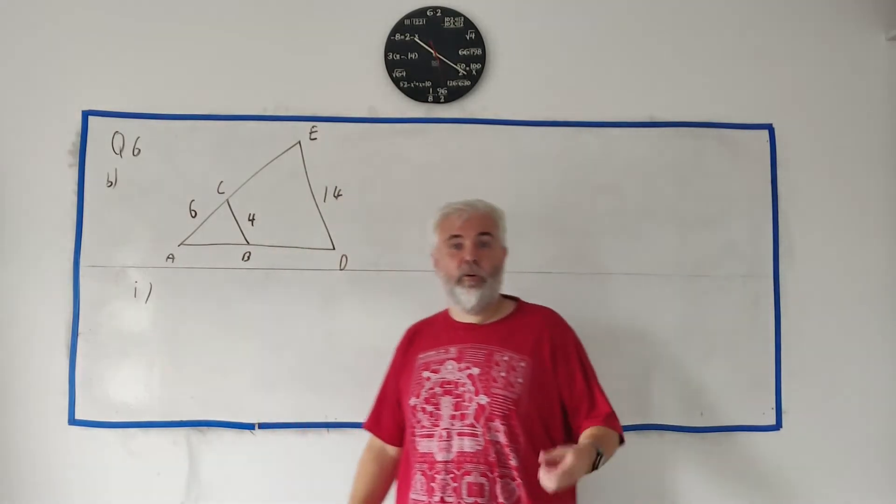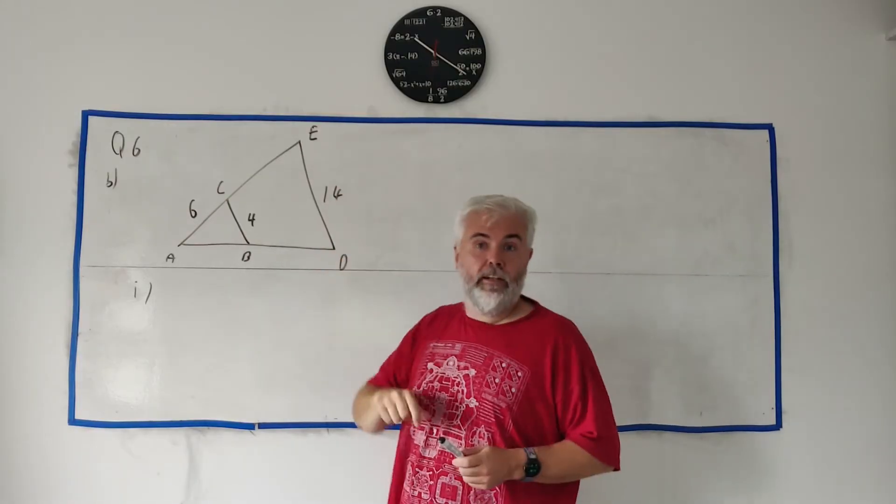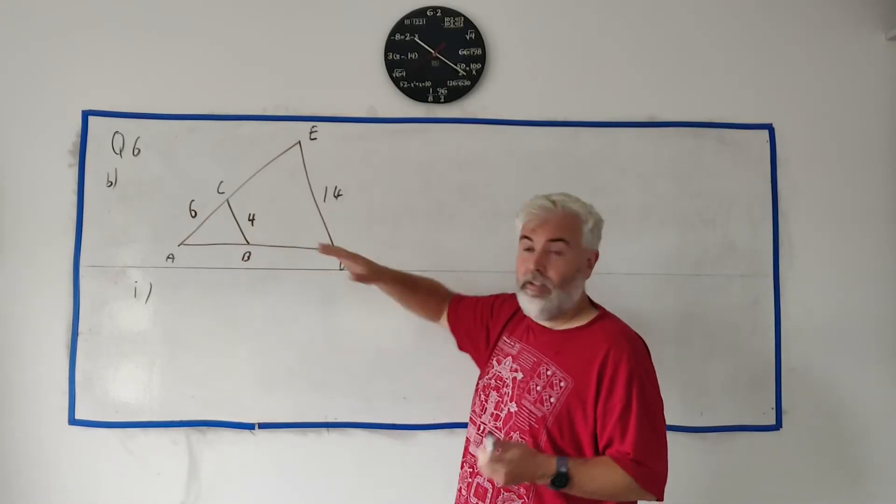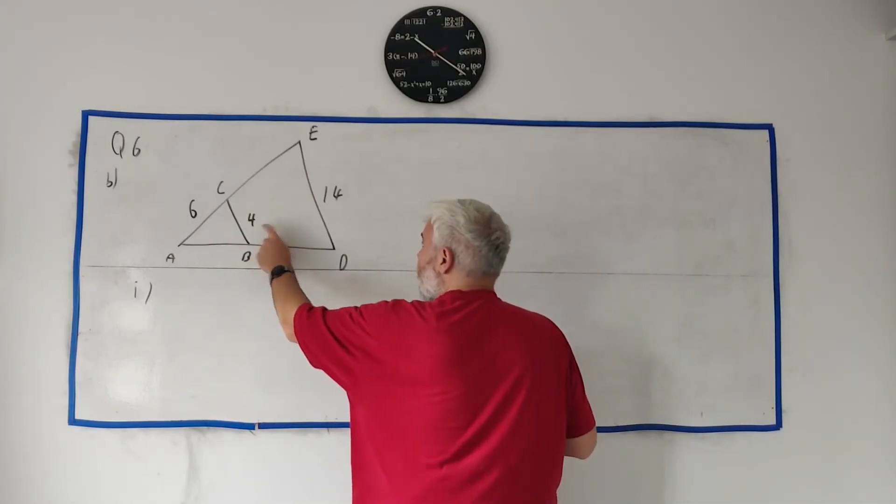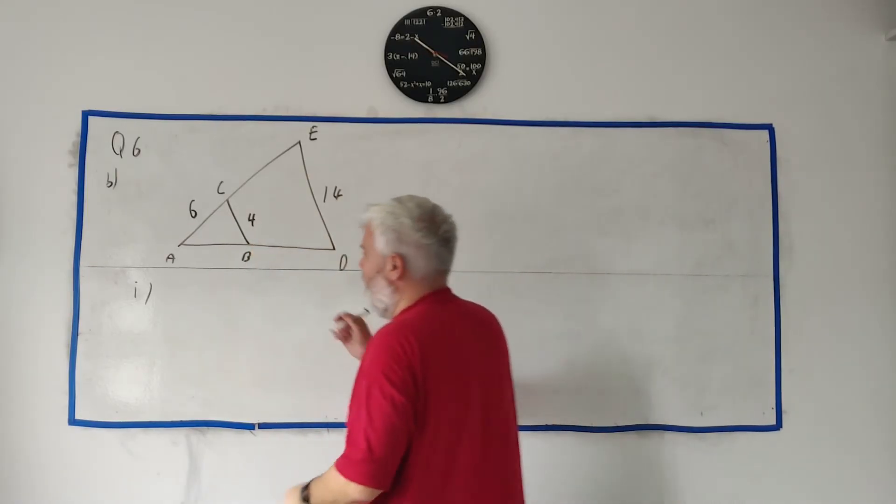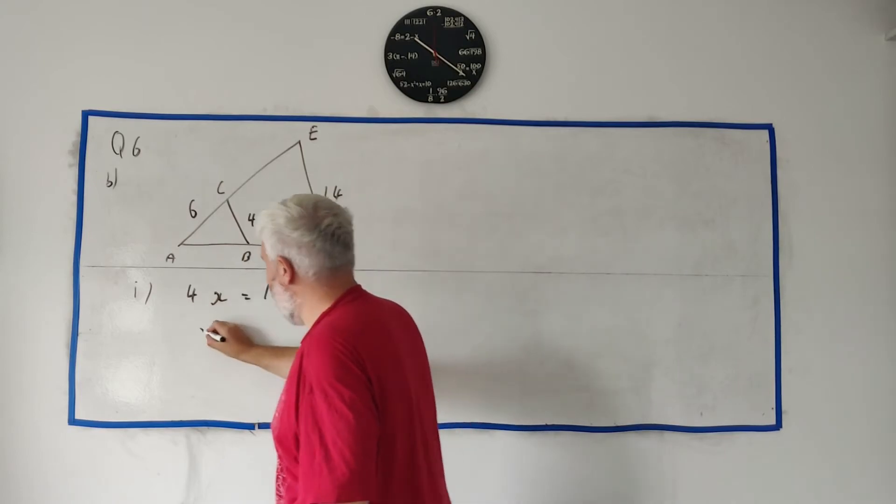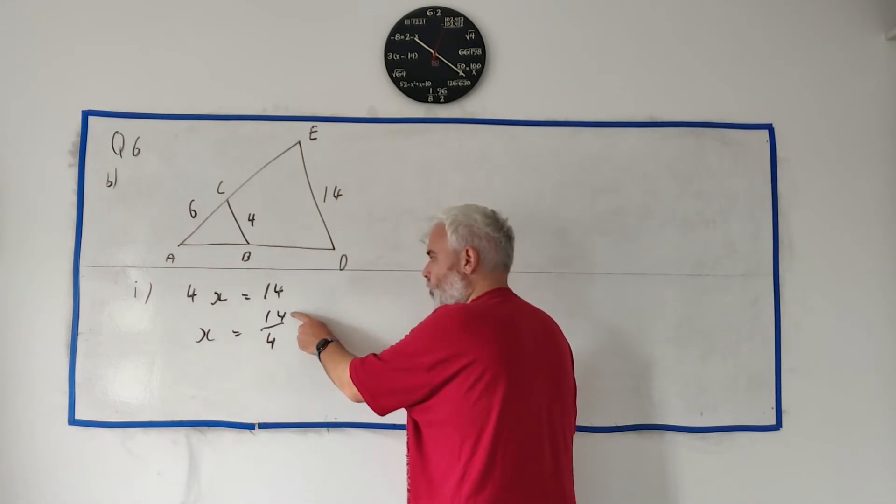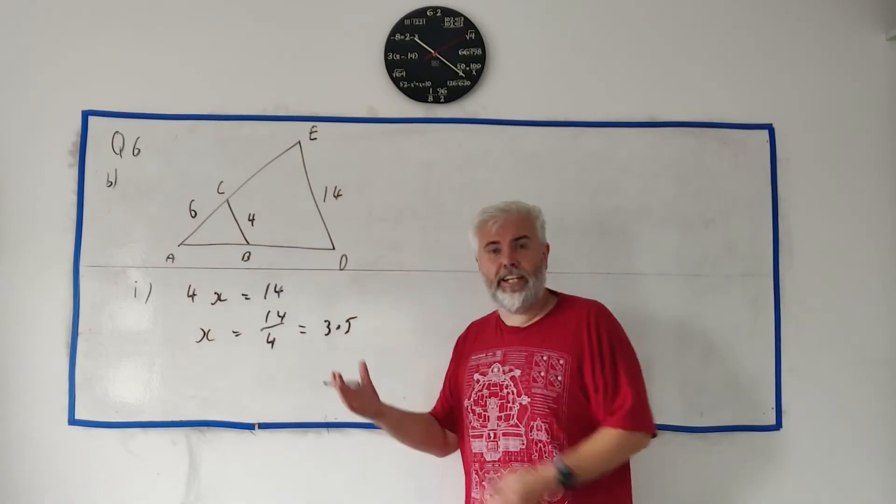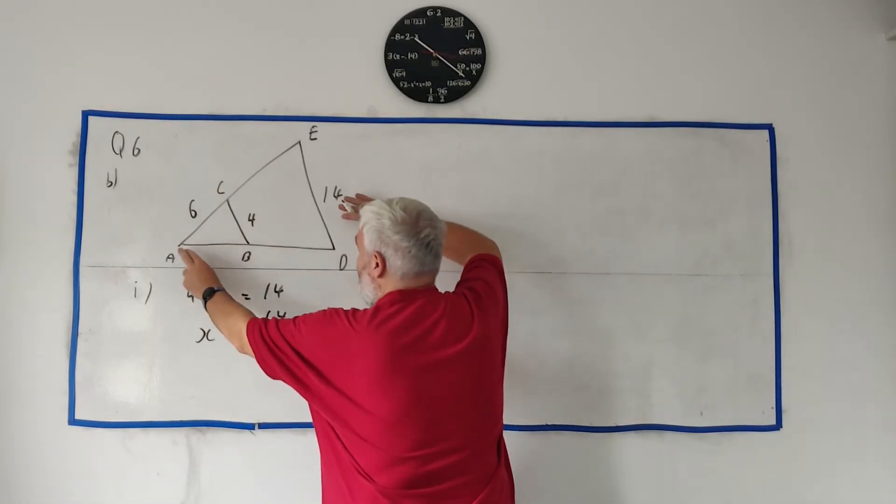They start off by asking use BC this length here and DE this length here to get the scale factor. They even tell you the answer is 3.5. Basically they're asking how much bigger than 4 is 14. So 4x equals 14, x equals 14 over 4, you put that in calculator you get 3.5. So this big triangle is 3.5 times bigger than the small one.